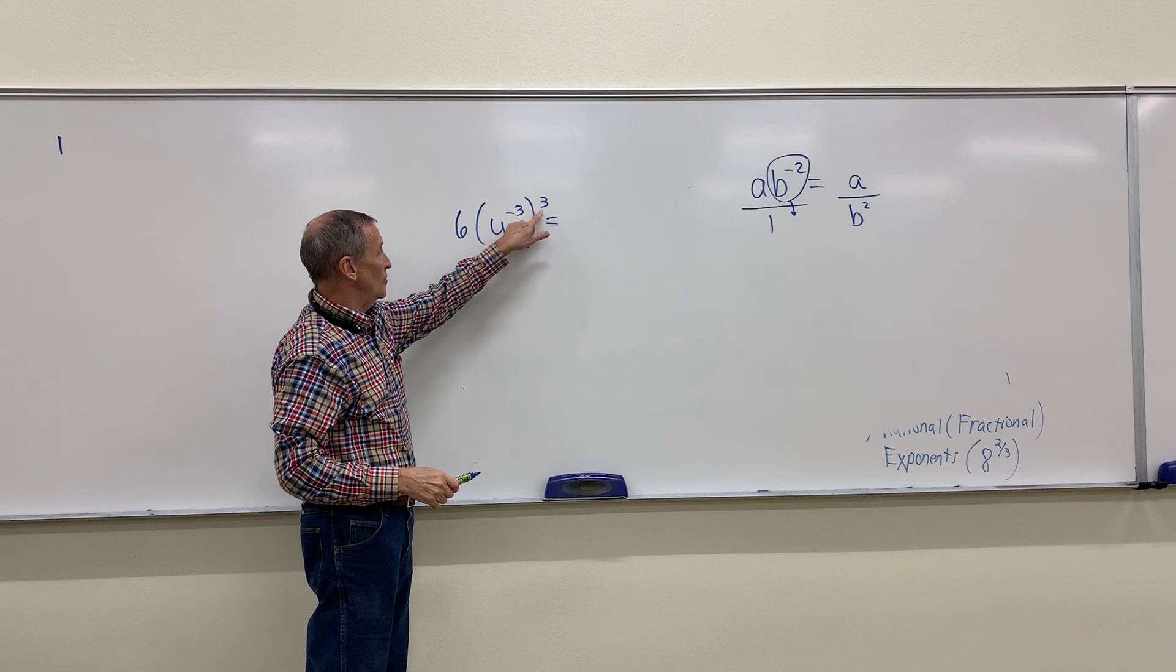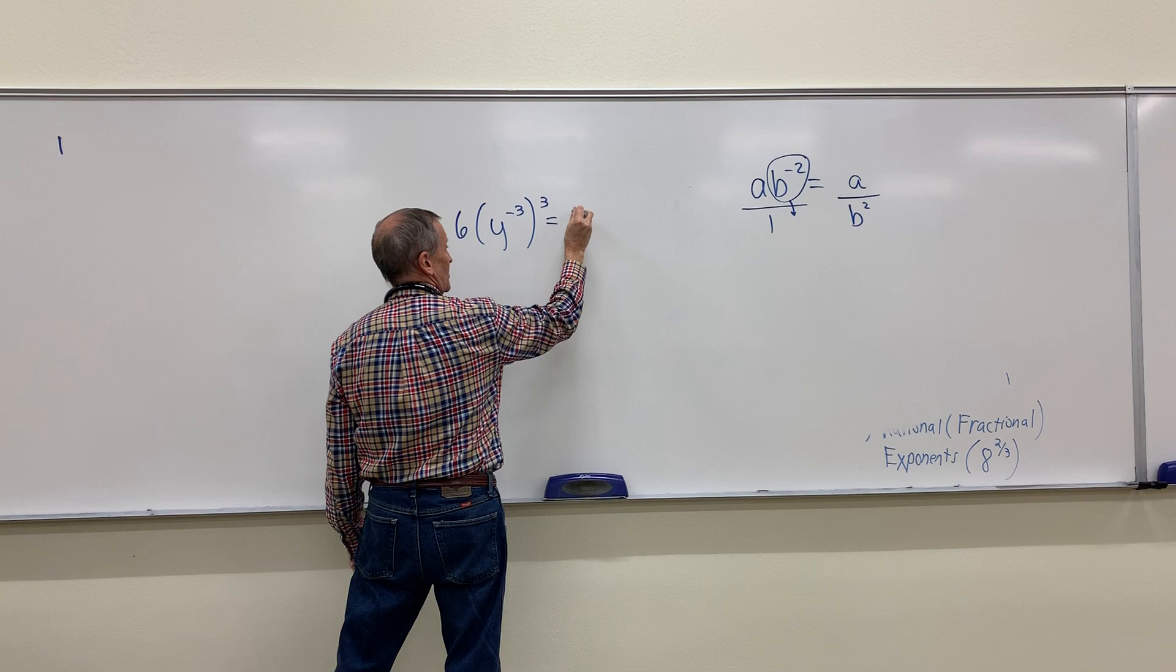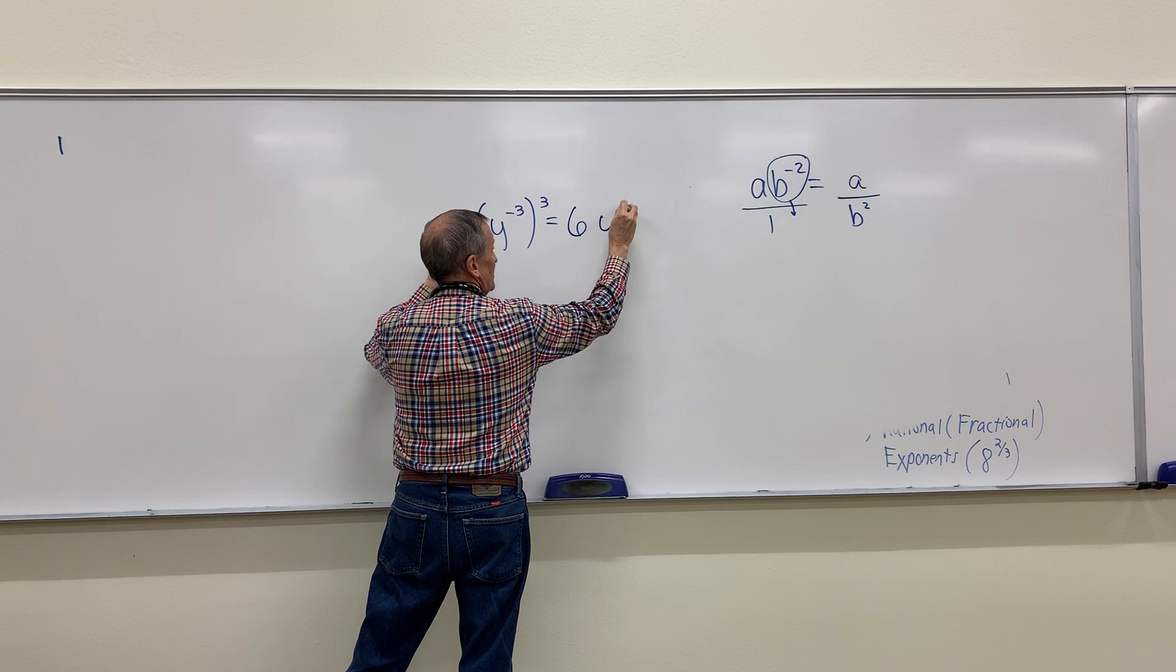A power to a power, go ahead and multiply your exponents. Just go ahead and take care of it first. I have a power to a power, I'm going to go ahead and multiply my outer exponent by my inner exponent. At the 6, negative 3 times 3, negative 5.